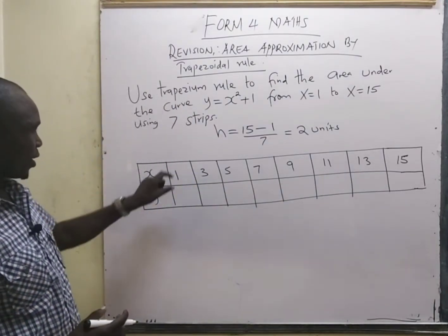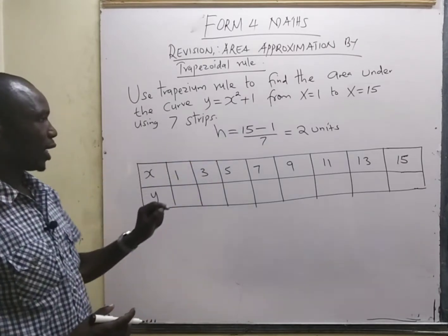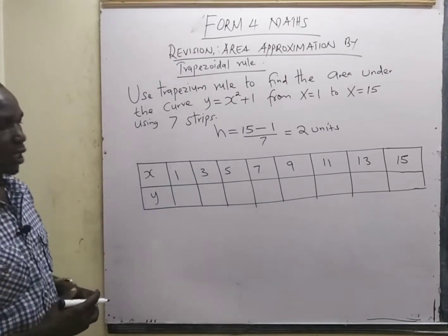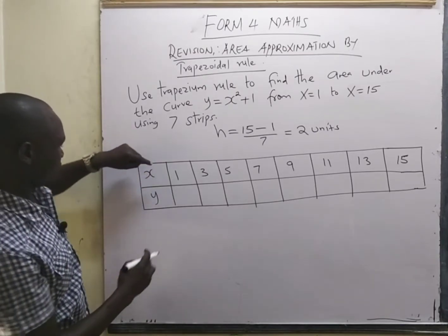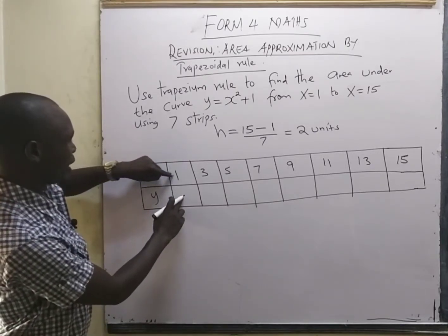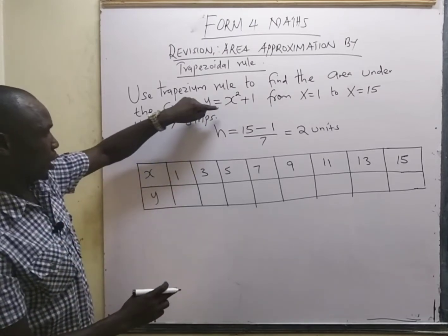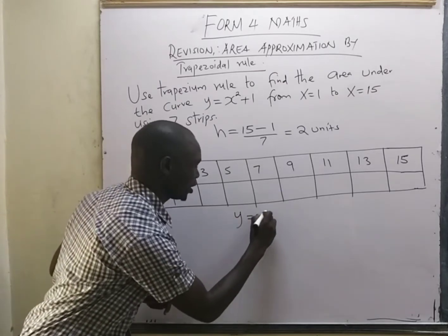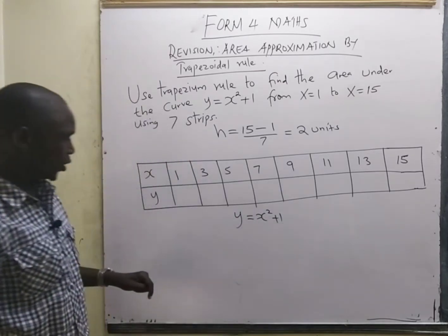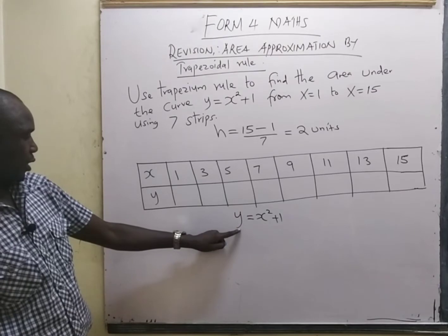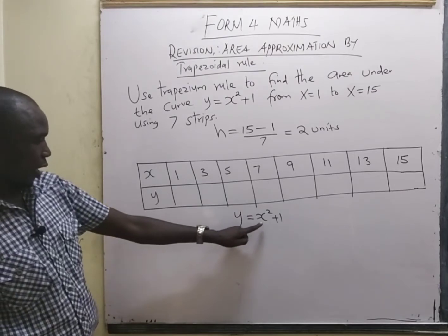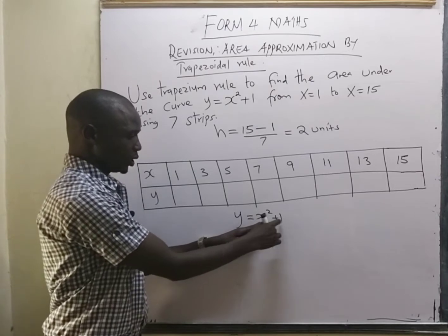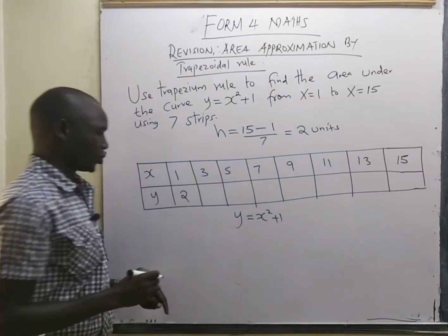From there, we use the values of x to get the values of y by substituting into the equation y = x² + 1. For x = 1: 1² + 1 = 2. For x = 3: 3² + 1 = 10.